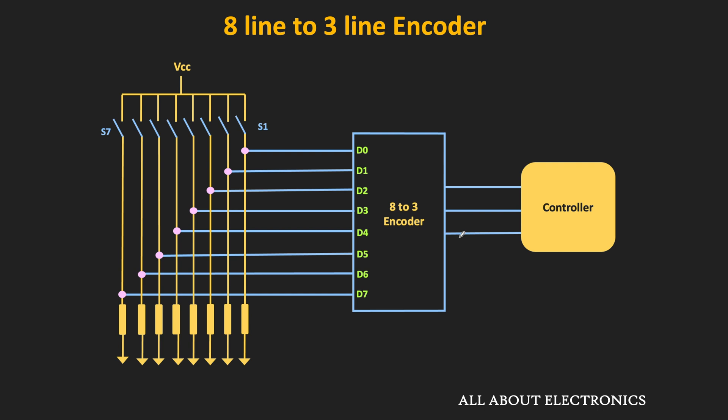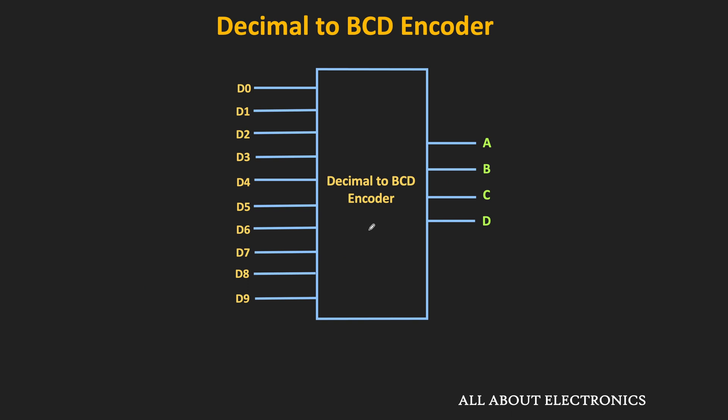This 8-line to 3-line encoder can also be used for octal-to-binary conversion, where each input represents a specific octal number and the output is the binary equivalent of that octal digit. Similarly, we can design a decimal-to-BCD encoder, which has 10 inputs and 4 outputs. Each input represents a specific decimal digit, and the output is the BCD equivalent code corresponding to that digit.